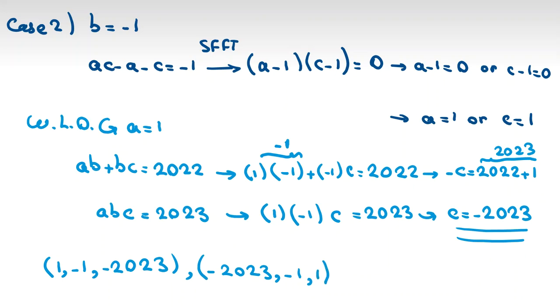Let me write a homework for you, similar to these things. The homework says: AB plus BC plus CA equal to 2022, and ABC equal to 2023, and A, B, C are integers. Try to solve this problem and comment your answers right below this video.